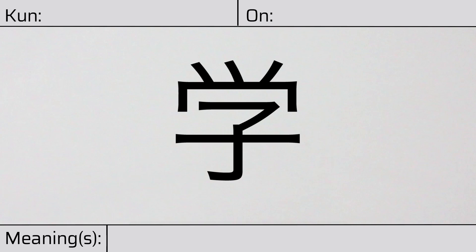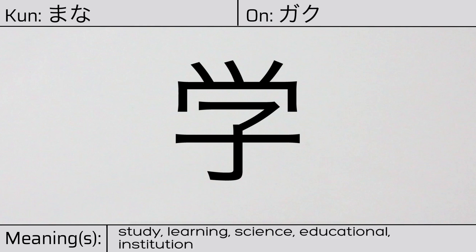Welcome to this lesson on Japanese kanji. Today, we'll be discussing this character. This kanji has a kunyomi or Japanese reading of mana, and it has onyomi or Chinese reading of gakku. This character has the meanings study, learning, science, educational, or institution.